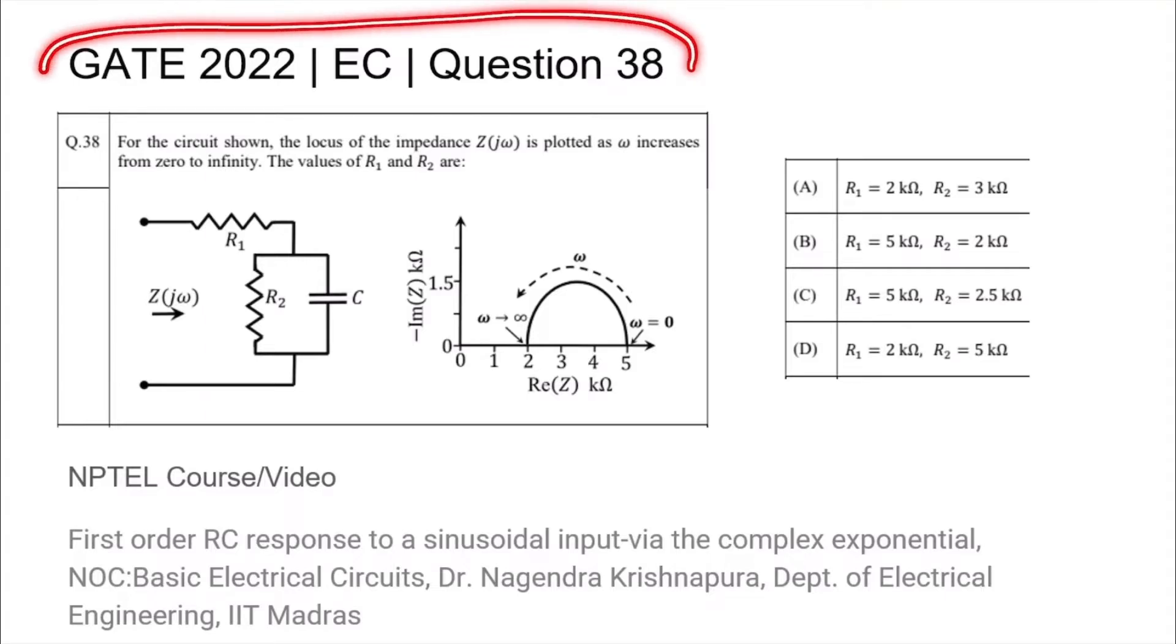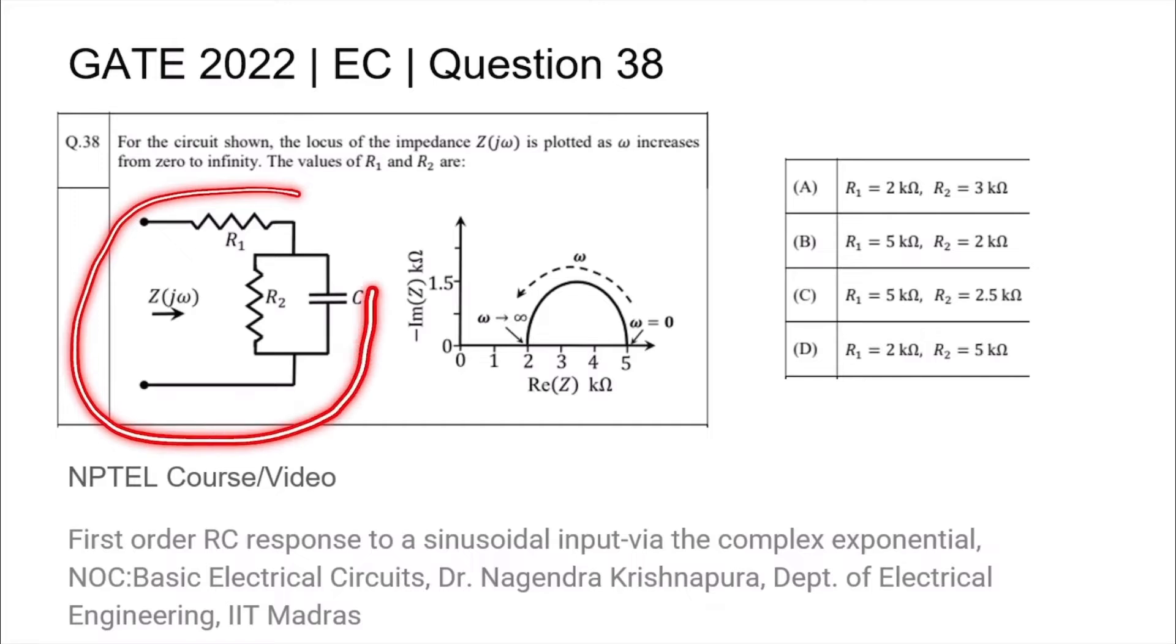This is question 38 from the GATE 2022 EC paper, where we are given the following R and C circuit and the locus plot of its impedance as omega is made to go from 0 to infinity.